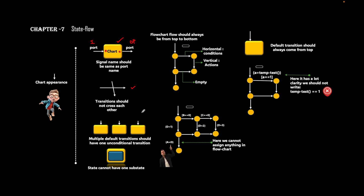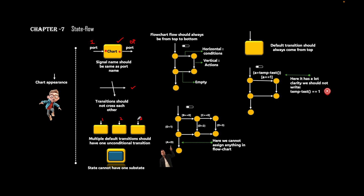Next is the default transition. As you already know, the default transition can be conditional or unconditional. Suppose you have a state chart with multiple default transitions — a first, second, and third default transition. In that case, at least one of the transitions should be unconditional, otherwise the state chart will not get activated. So we can choose the first default transition to be unconditional, and the remaining ones can have conditions.